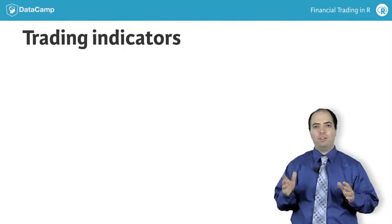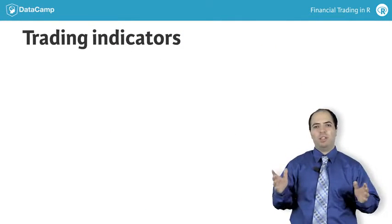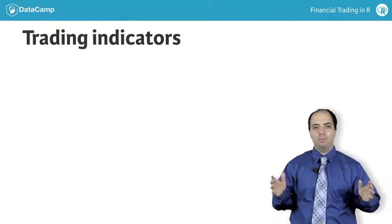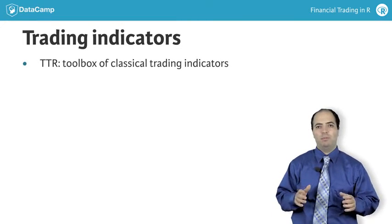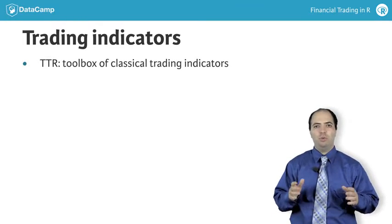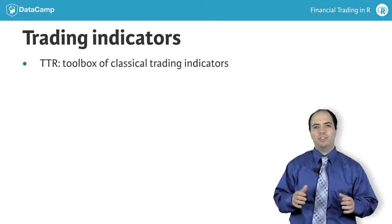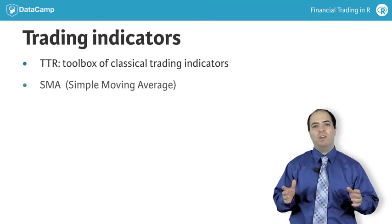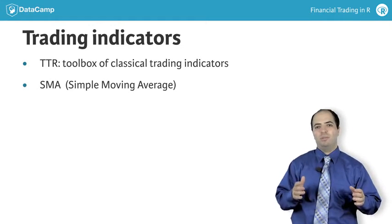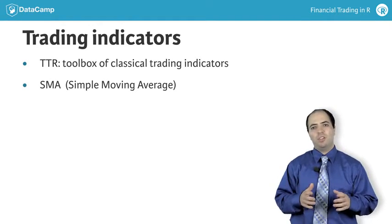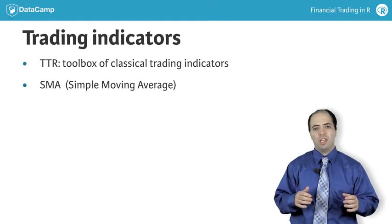It is possible to plot filters on top of plotted financial data. R's TTR library, written by Josh Ulrich, contains a toolbox of classical trading indicators, such as a simple moving average, more colloquially known as a moving average, and sometimes referred to as an SMA.